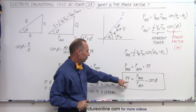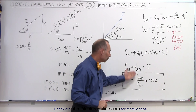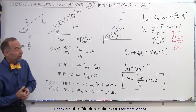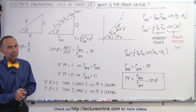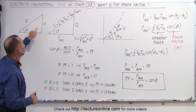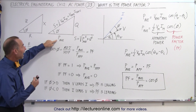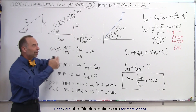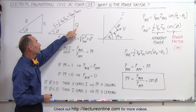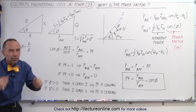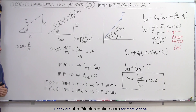So the basic relationship is that the power factor is the cosine of the phase angle and is the ratio of the average power divided by the apparent power. It's related to the phase angle between the resistance, reactance, and impedance — the same phase angle that relates to the average power consumed by the resistor, the reactive power temporarily taken and returned by the inductor and capacitor, and the apparent power as the hypotenuse of the power triangle. That's how we think about the concept of the power factor.